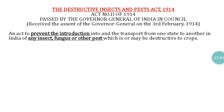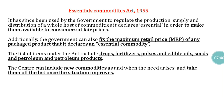The Destructive Insects and Pests Act 1914, also called the DIP Act, is the oldest act — Act Number 11 of 1914, passed by the Governor General of India in Council. It is mainly to prevent the introduction and transport of insects, fungi, and other pests from one state to another in India, as those pests may be destructive to crops.